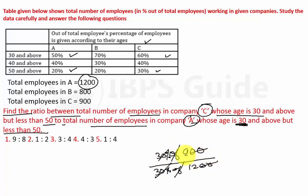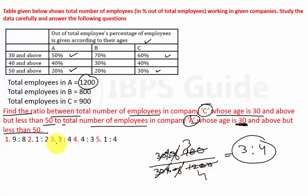So the ratio of 270 to 360 simplifies to 3 is to 4. Option number 3 will be the correct answer.